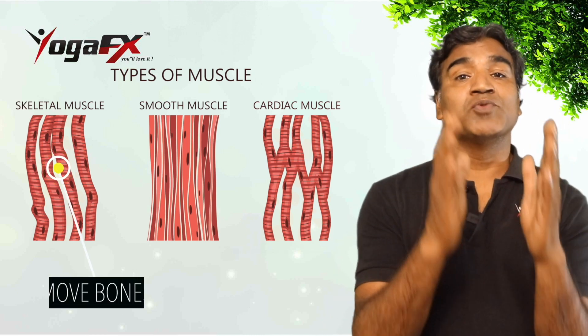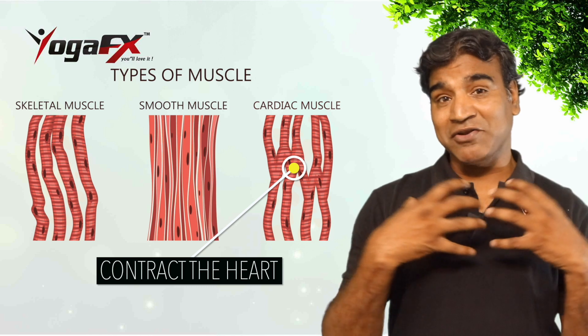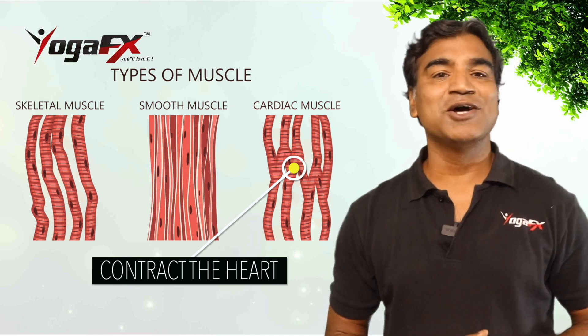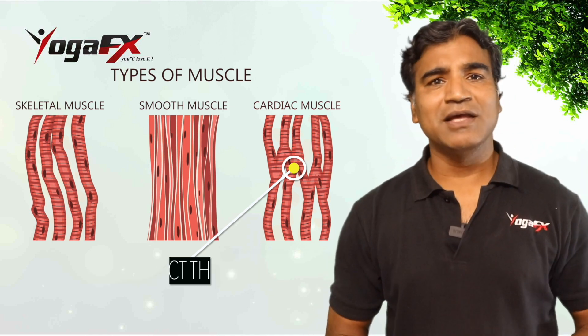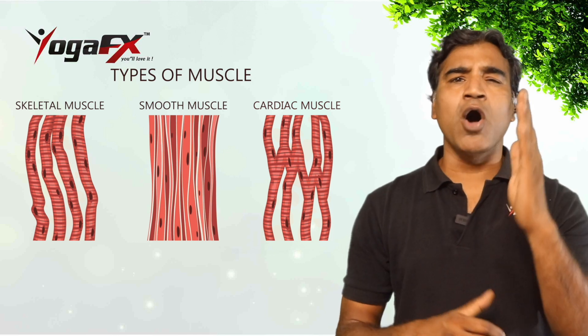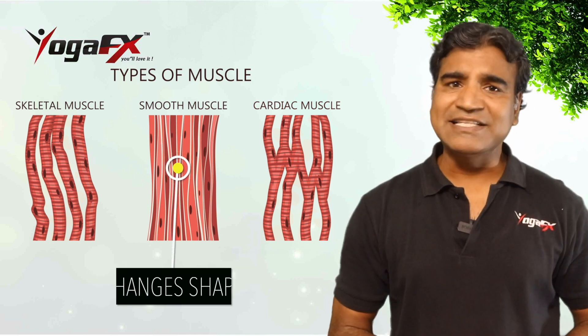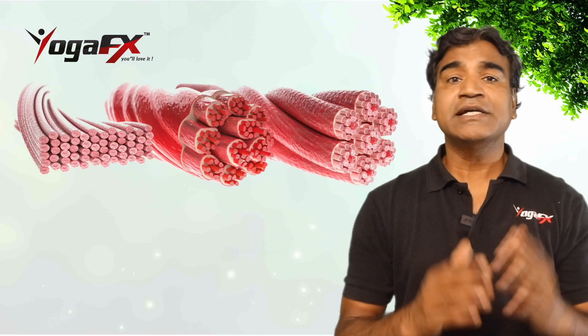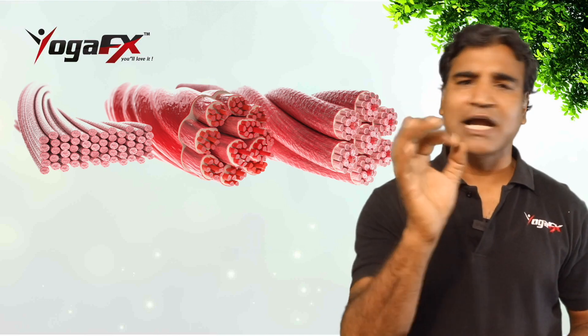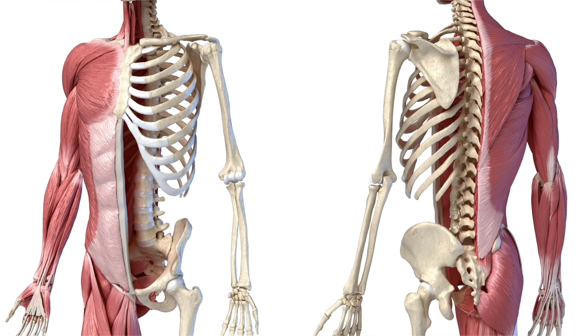Skeletal muscles move bones and other structures. Cardiac muscles contract the heart to pump the blood. The smooth muscle tissue that forms organs like the stomach and bladder changes shape to facilitate bodily functions. Here are more details about the structure and function of each type of muscle tissue in the human muscular system.